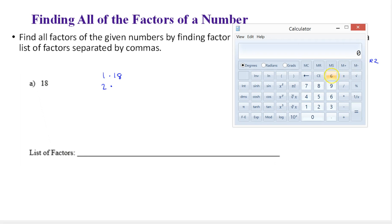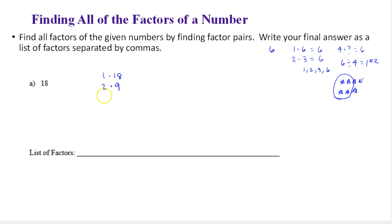Well, is two a factor of 18? You probably know two times nine is 18, but let's just use the calculator as an aid for when the numbers get larger. If I divide 18 by 2, I get 9, and notice there's no decimal after that, which means there's no remainder. So 2 times 9 is a factor pair, and now we know both 2 and 9 are factors.